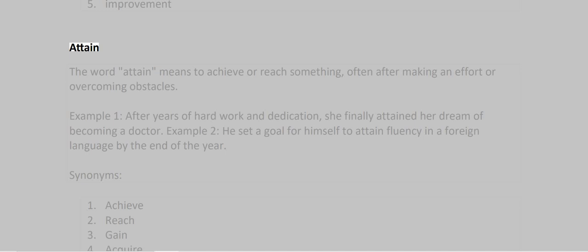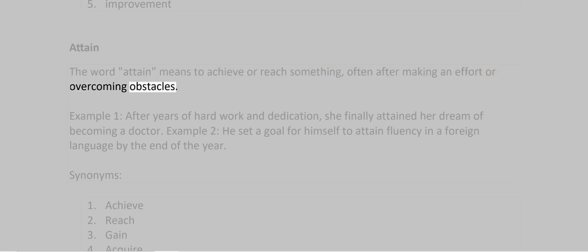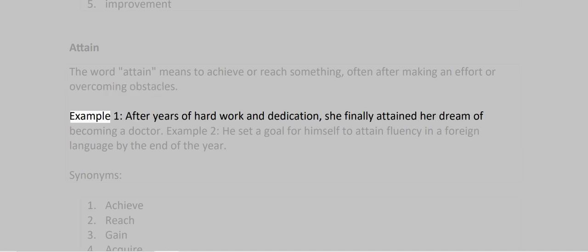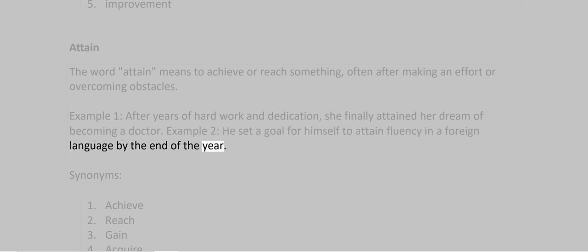Attain. The word attain means to achieve or reach something, often after making an effort or overcoming obstacles. Example 1: After years of hard work and dedication, she finally attained her dream of becoming a doctor. Example 2: He set a goal for himself to attain fluency in a foreign language by the end of the year.